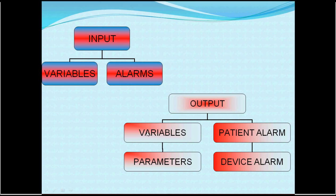The output for these variables comes out numerically and graphically. The output for the alarms is also displayed. In addition, there are calculated parameters as a function of the lungs and respiratory system — such as dynamic and static compliance, airway resistance, total minute volume, oxygen consumption, and carbon dioxide output. Finally, there are device alarms when something goes wrong with the ventilator circuits.